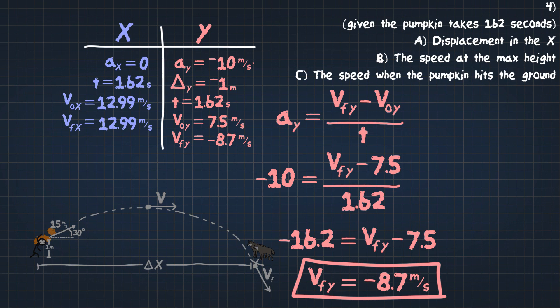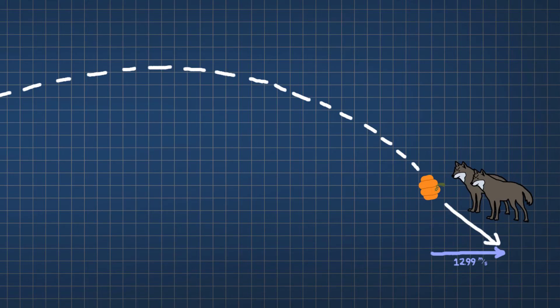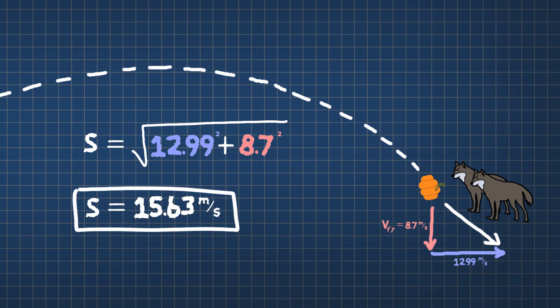We know the final velocity in the x, which is 12.99. Now, we have to combine both of these. We have 12.99 and 8.7. The final speed that hits the ground is going to be the combination of both of these. So we're going to use Pythagorean theorem to figure this out. The speed is going to be equal to the square root of 12.99 squared plus 8.7 squared. And this is going to give us 15.63 meters per second.